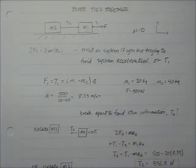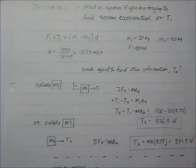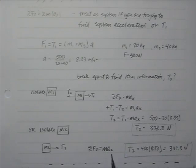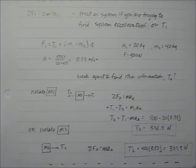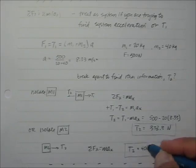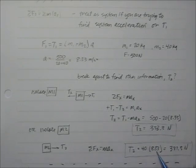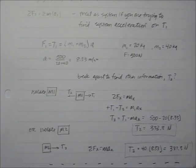Now let's isolate M2 to verify. Drawing the free body diagram of M2, we have T2 as the only force in X. Sum of forces in X equals M2 times acceleration: T2 equals 40 kg times 8.33, which equals 333 N. That matches what we found before.